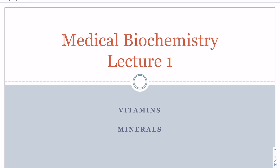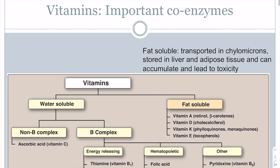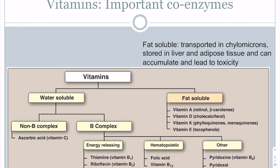Our first lecture for medical biochemistry is going to be on vitamins and minerals. Vitamins are important because they are coenzymes, which means they help our enzymes work in many different processes in your body. There are two general classes of vitamins: water-soluble vitamins, which can move through the blood rather easily, and fat-soluble vitamins, which have to be packaged into particles to move through the blood. Remember our four fat-soluble vitamins: A, D, K, and E. All other vitamins fall into the water-soluble category.